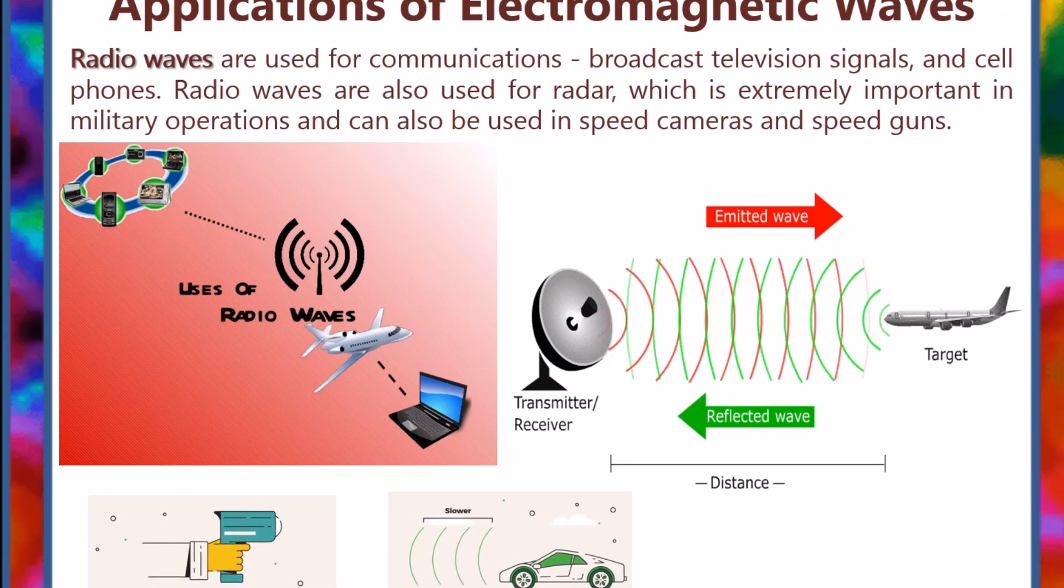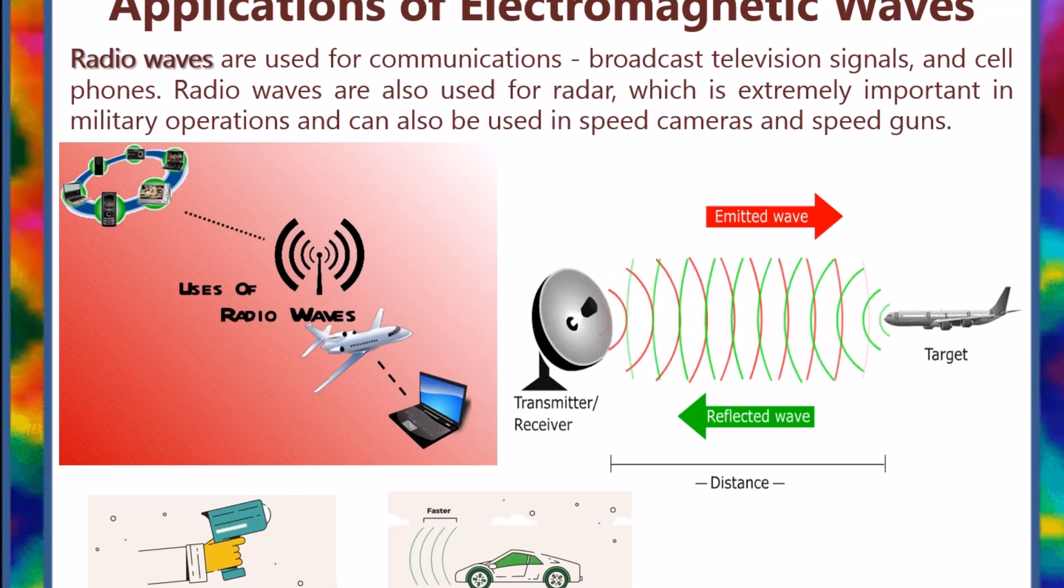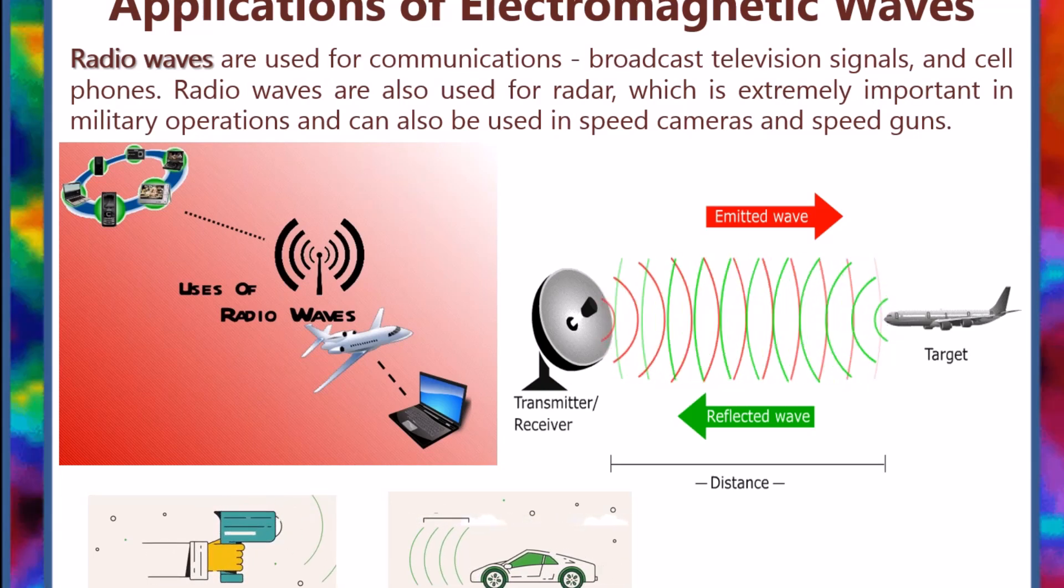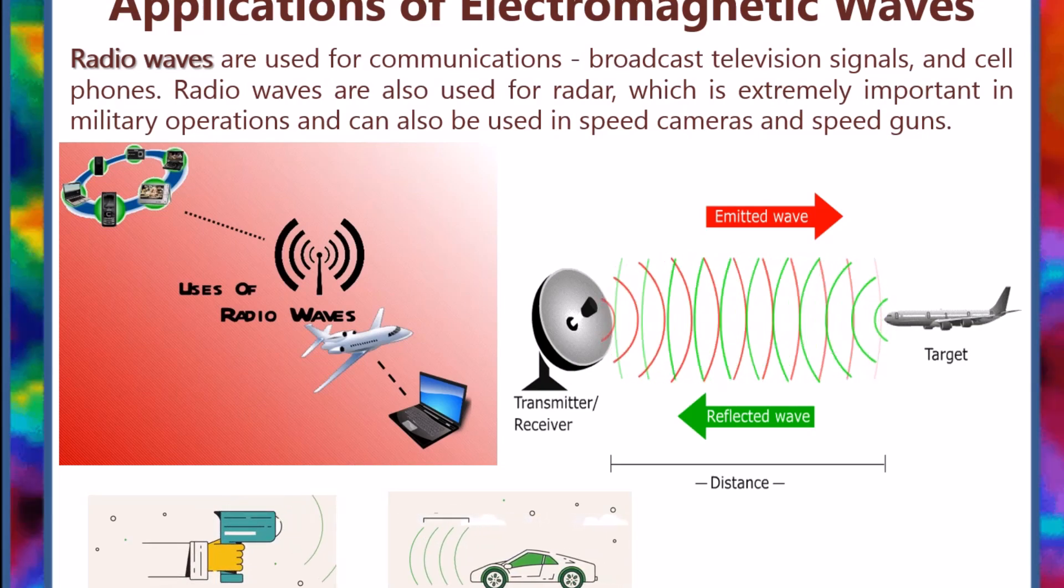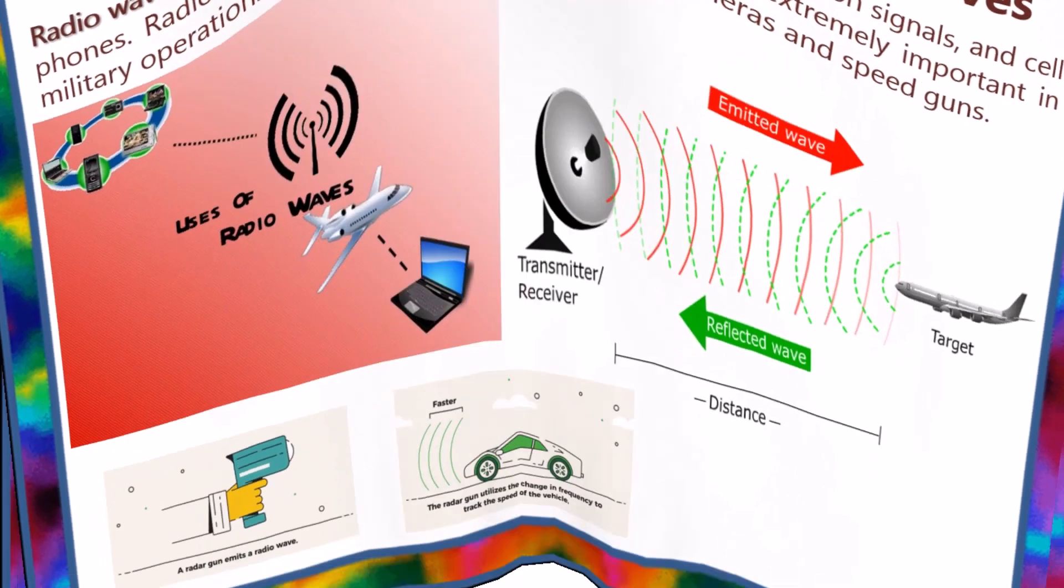Radio waves are used for communications. That's why the thing in your car is called a radio. But they're not just for FM and AM radio. They're also used to broadcast television signals, and they're how mobile phones work. Your voice is sent through radio signals.